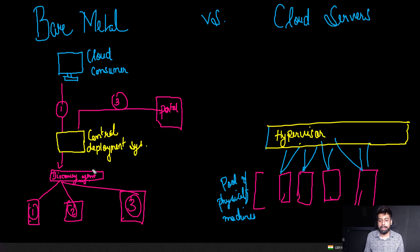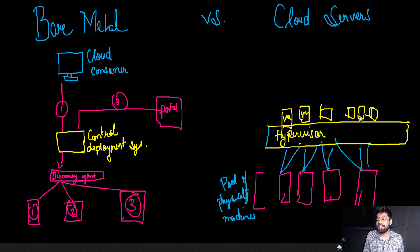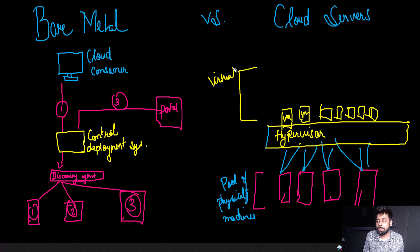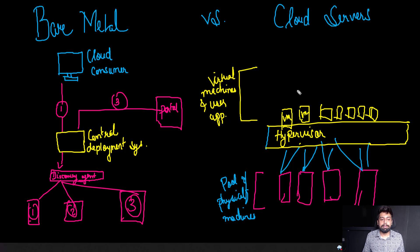Now you understand the difference: in bare metal, the discovery agent was deploying central systems directly — there was no hypervisor. But in the case of cloud servers, you have hypervisors with a lot of VMs. These VMs are connected with a lot of other neighbors, as I was stating earlier. In this pool there are the virtual machines and the user applications as well.